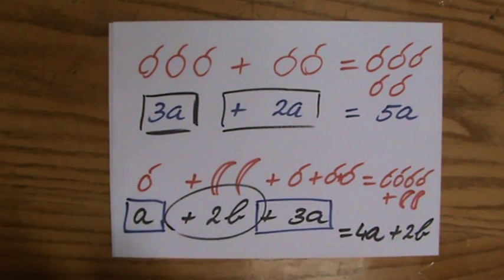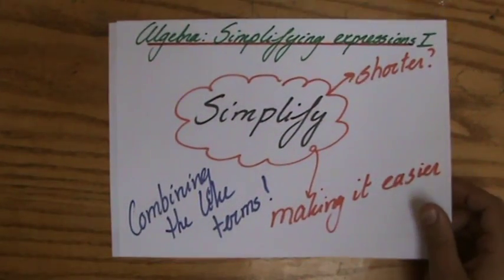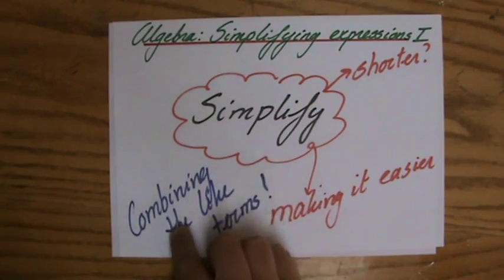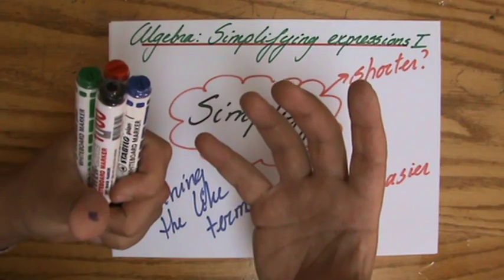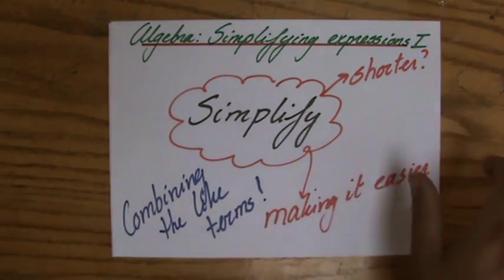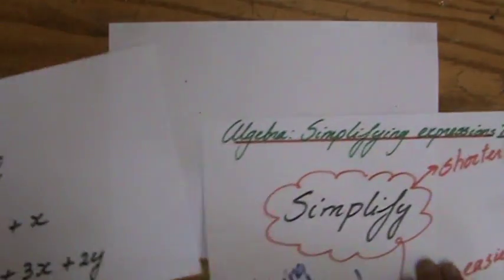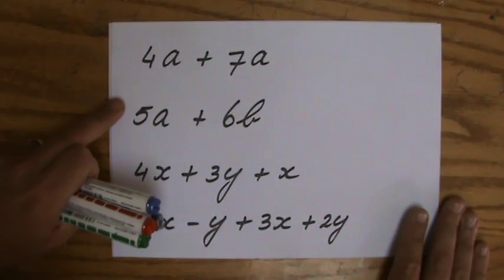So this is simplifying expressions, making it easier, making it shorter if you like, combining the like terms, where like terms are those terms in an expression with the same variable. And remember the important language, we don't really like apples and bananas, we're too old for that, so let's have a look at these four example expressions.